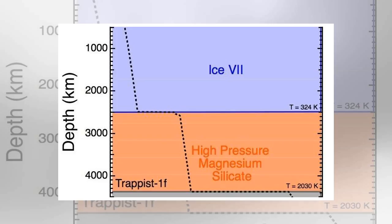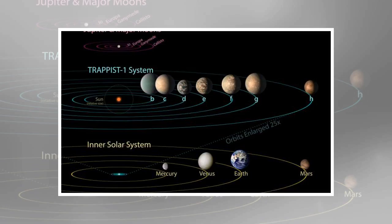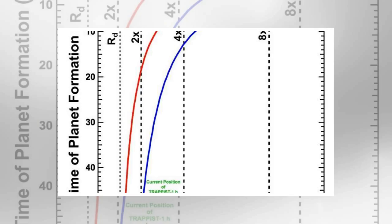If planets formed quickly, they must have formed farther away and migrated in a greater distance to contain significant ice. Because Trappist-1 dims over time, if the planets formed later, they could have formed closer to the host star and still be ice-rich.